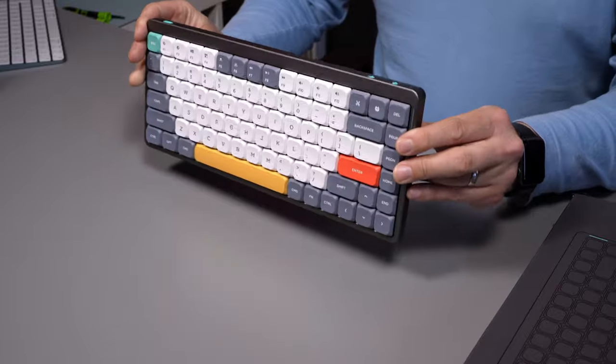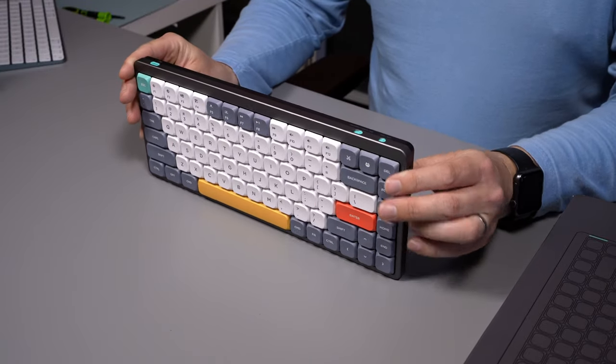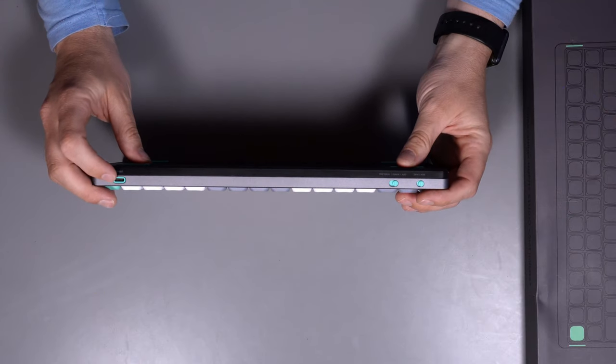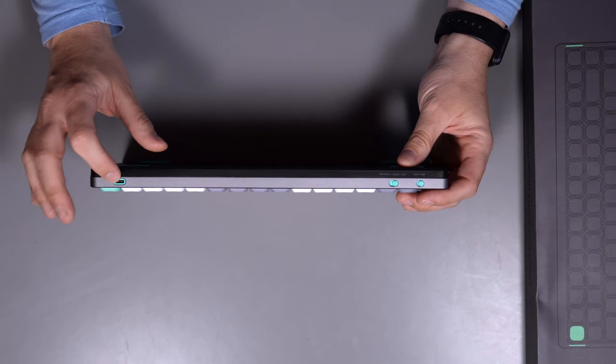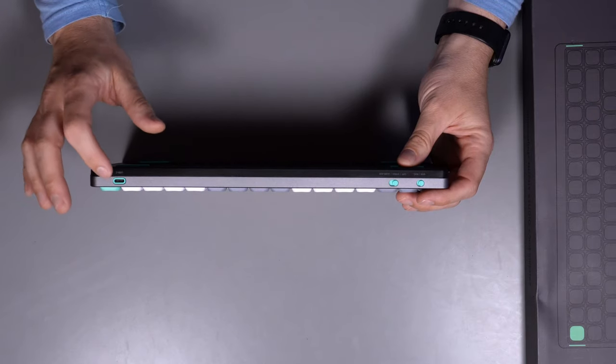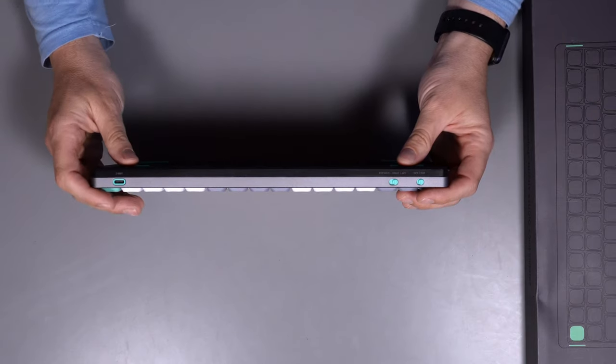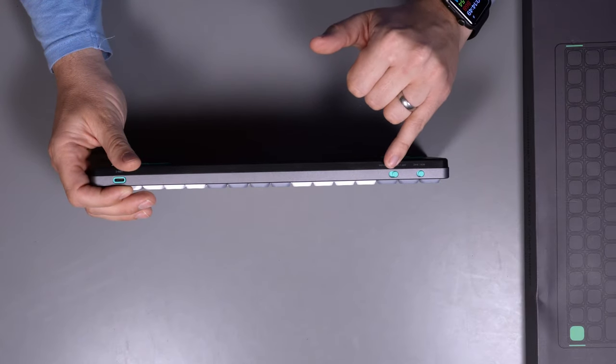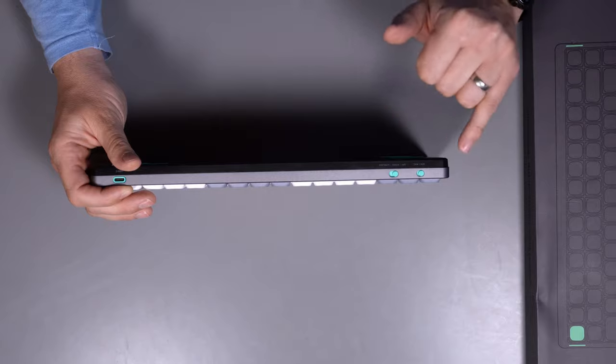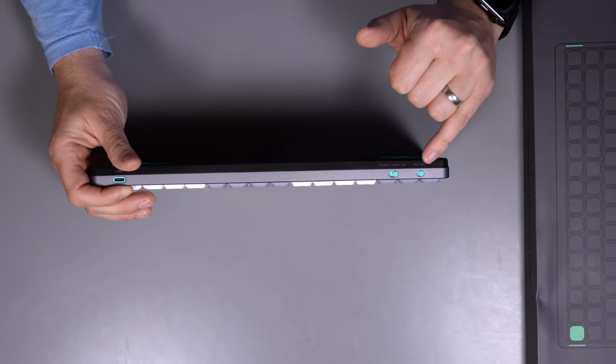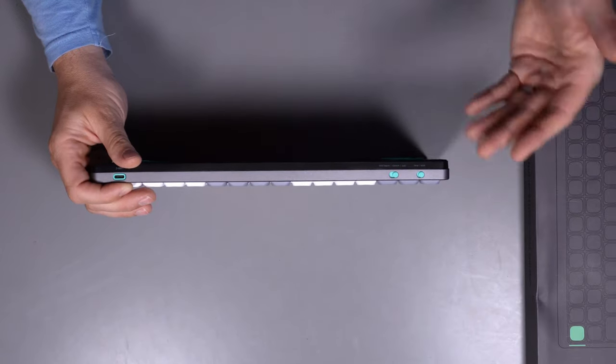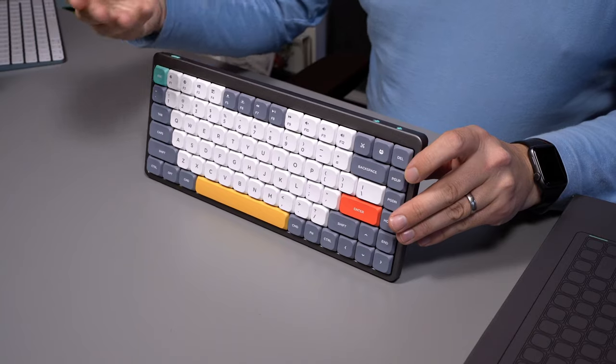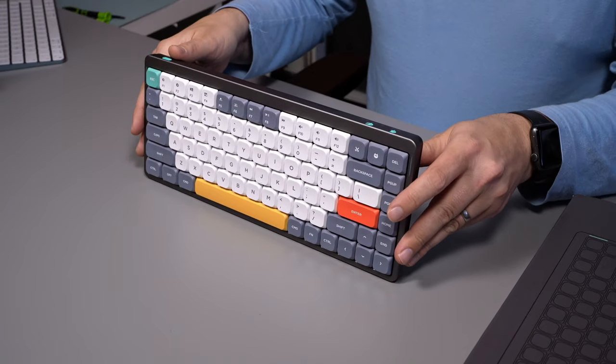Also Nufi do offer other keycap sets if you don't particularly like this color. Now looking around the actual keyboard itself, if we look to the top of the keyboard, you can see we've got our USB-C port there. You can use that for wired use, or you can use that to charge the keyboard for if you're using it wirelessly. We've also got a switch over this side, which has off, wired or wireless. And then lastly we've got a switch whether you have it in Windows mode or Mac mode. And that will obviously change the actual key functions, depending on the operating system you're in.